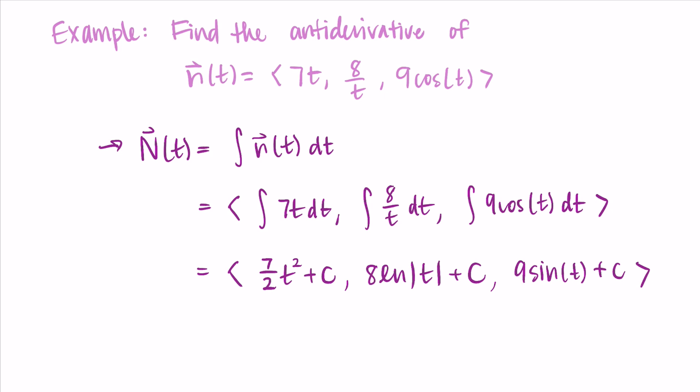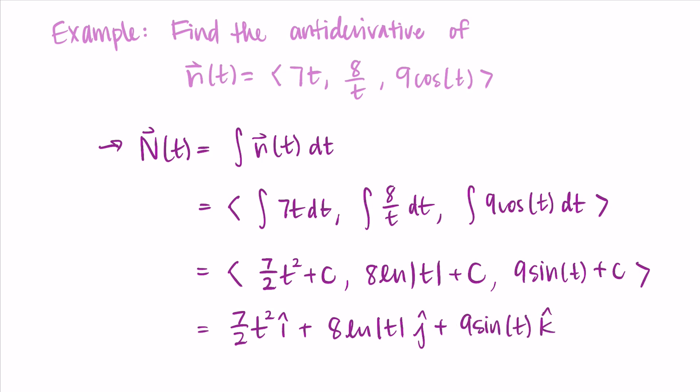Converting to i,j,k notation: (7/2 t²)i + 8ln(t)j + 9sin(t)k, and we typically write a single + C vector at the end, collecting all constants. The key point is: to integrate a vector-valued function, just take the antiderivative of each component, exactly as you do with derivatives. This will become especially useful for kinematics with position, velocity, and acceleration. For now, practice finding derivatives and antiderivatives of vector-valued functions. Thanks for watching!